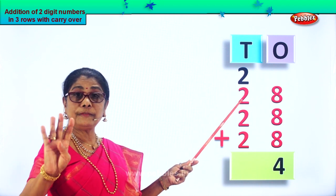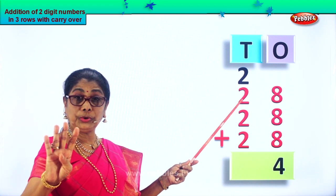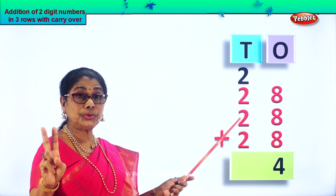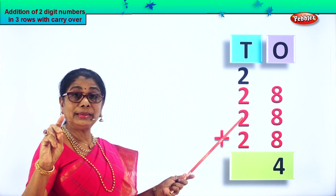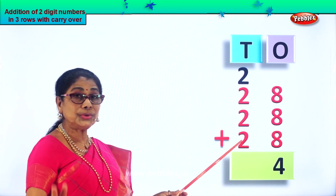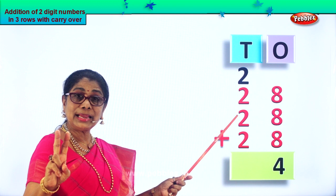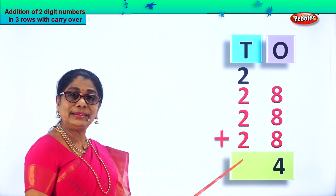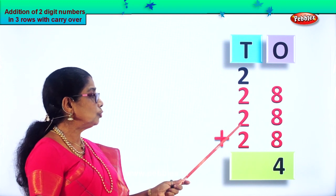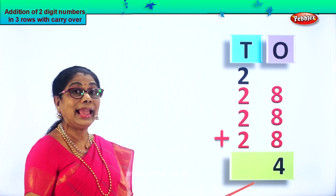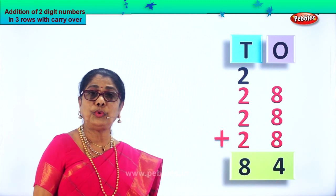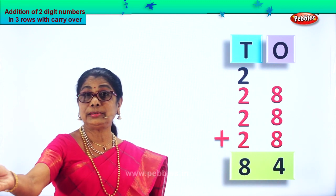Now we add all the tens. Two plus two is four. Four plus two: five, six. Six plus two: seven, eight. Two plus two plus two plus two is eight tens. So we put eight here — eighty-four is your answer.